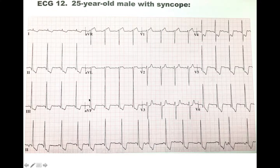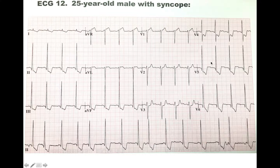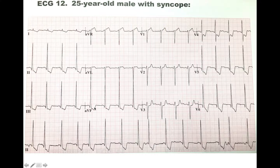Another thing is that the QRS voltages are pronounced. Looking at V5 and V1, one of the things I'm looking for is left ventricular hypertrophy. When you add the R wave in V5 and the S wave in V1, and if it's greater than 40 millimeters, that indicates left ventricular hypertrophy. Also, looking at AVR, if the S wave is greater than 15 millimeters, that also indicates LVH. And in AVF, if the R wave is greater than 21 millimeters, that also indicates left ventricular hypertrophy.